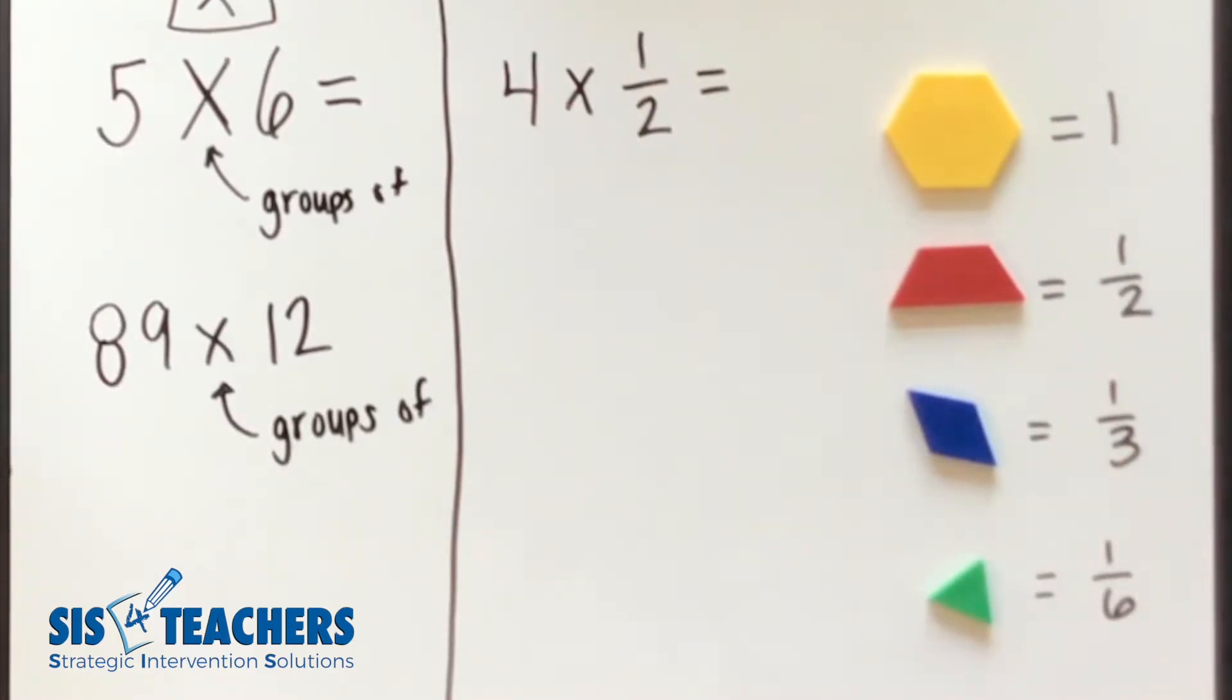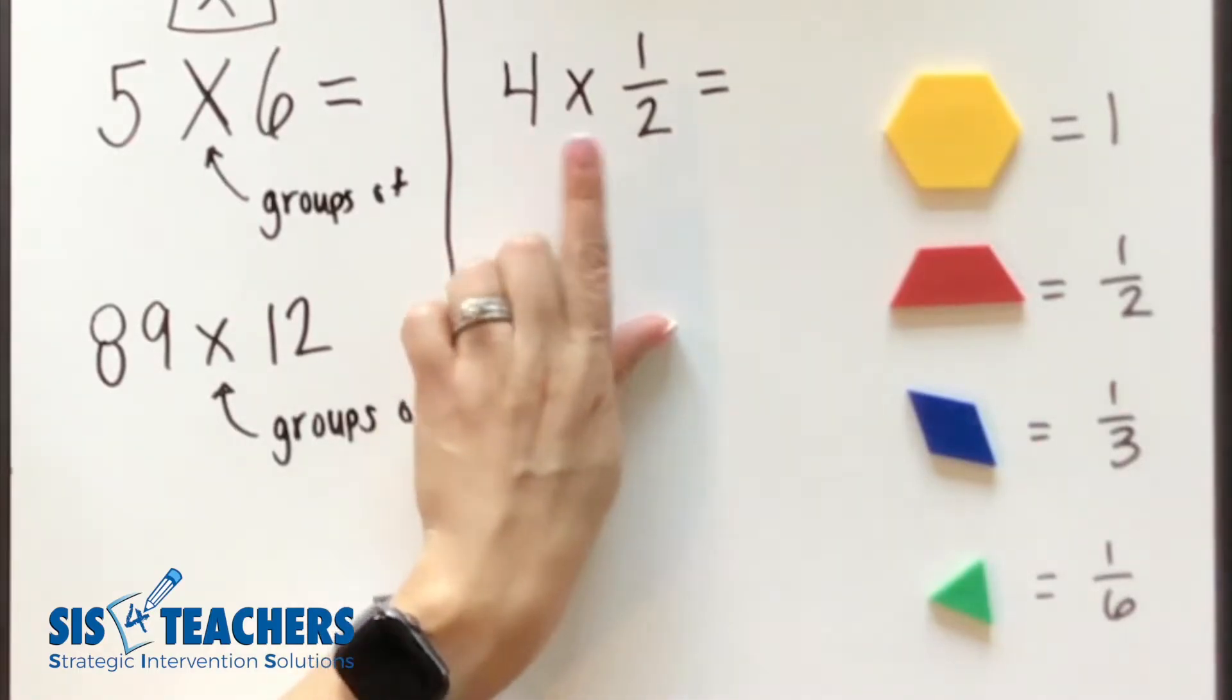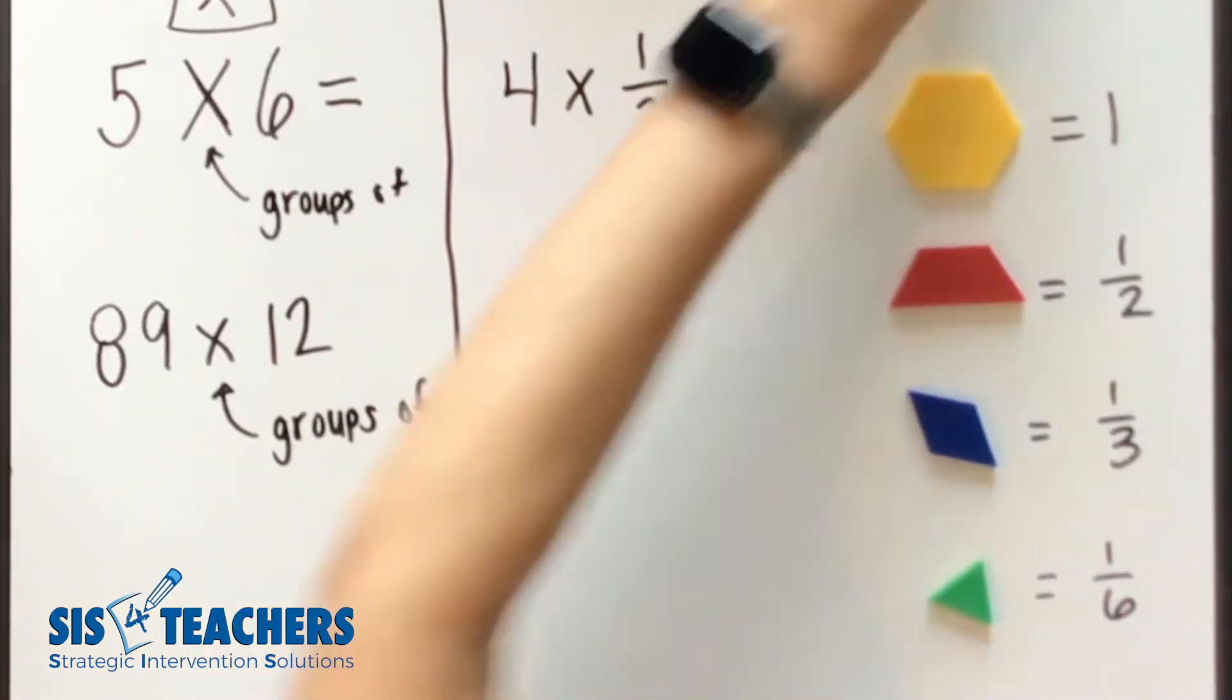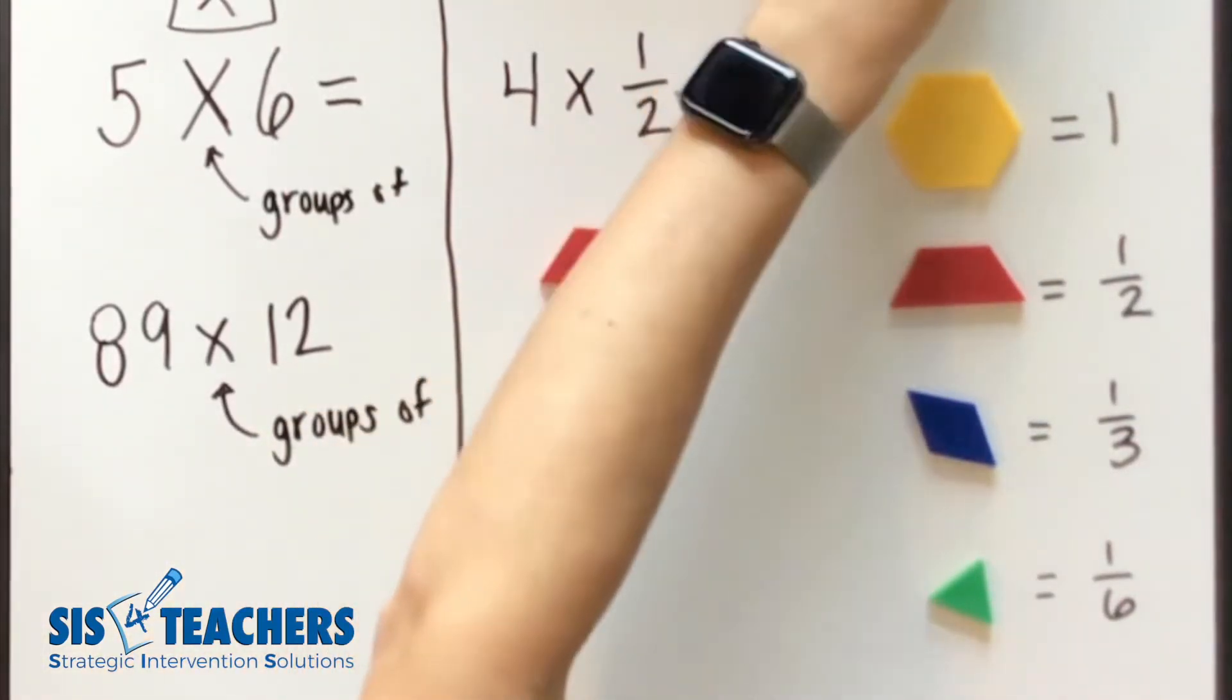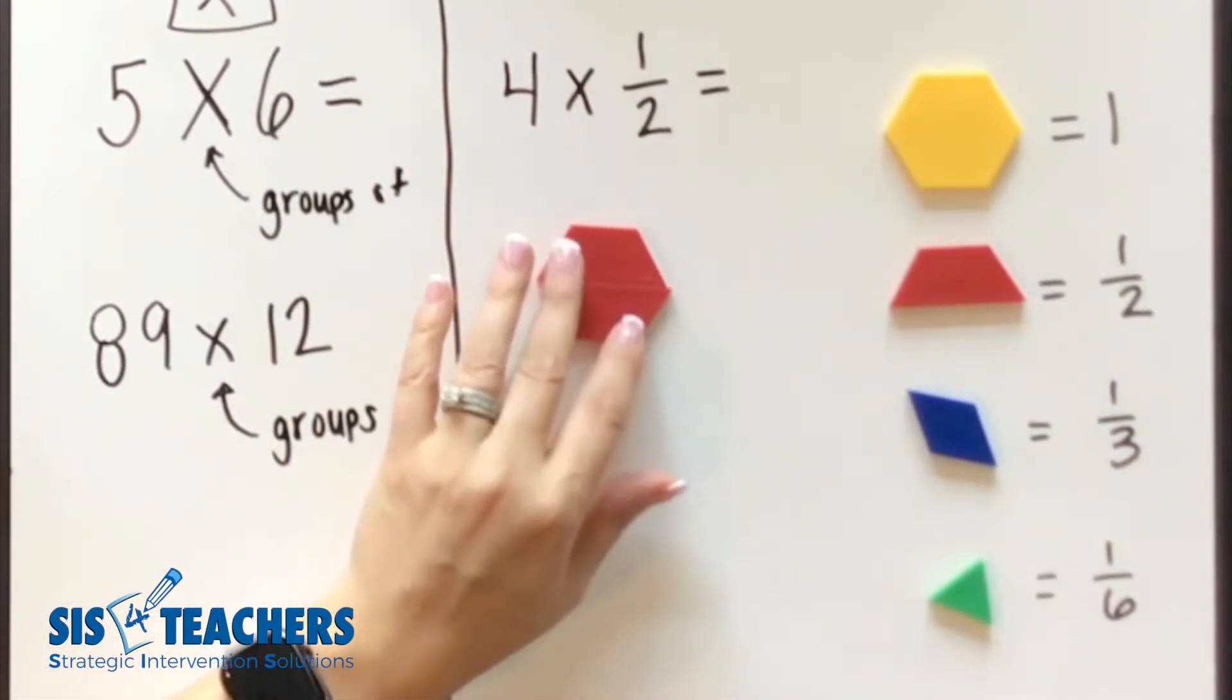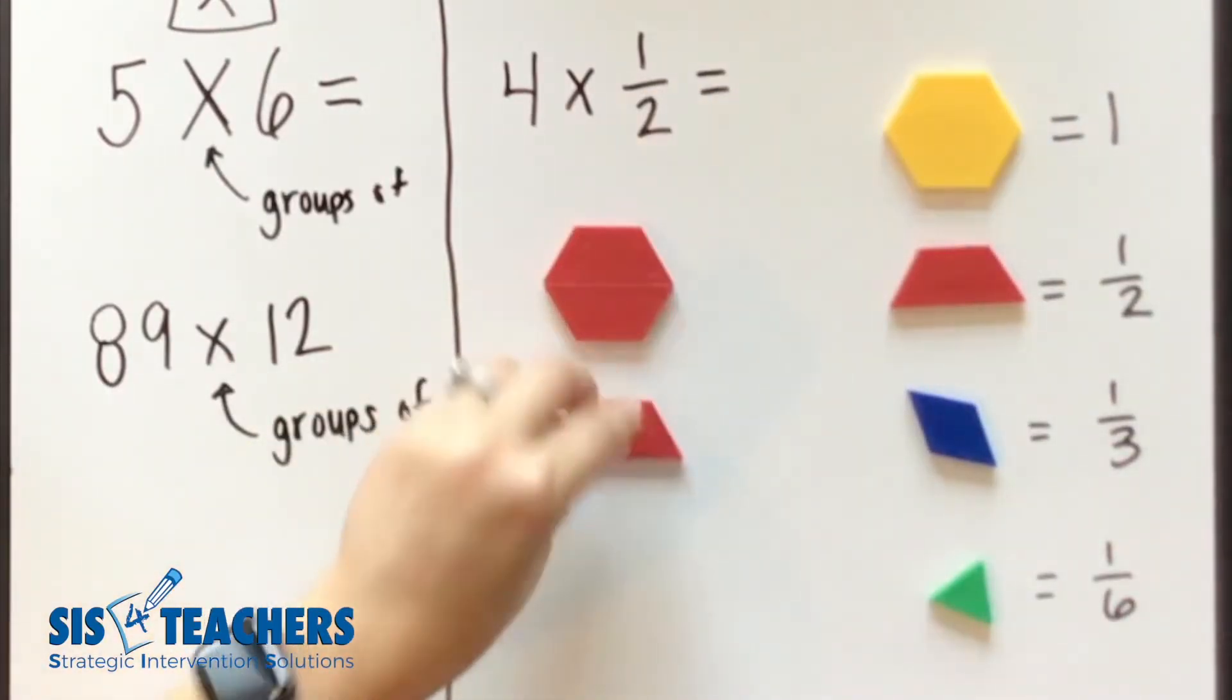As we look at this, we've posted the unit fractions that we might want to use to help us while we're trying to conceptually understand what fractions are asking. So if this wants to know four halves, we're going to pull down the four halves. So we have one group, two groups, three, and then four.